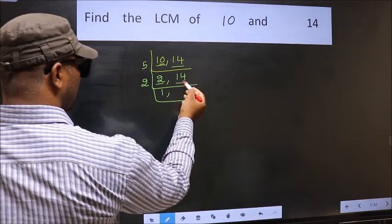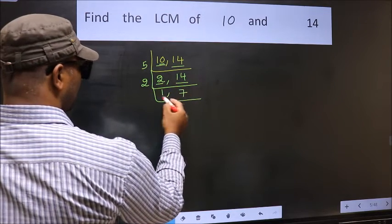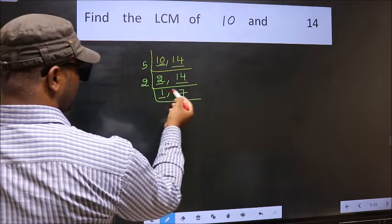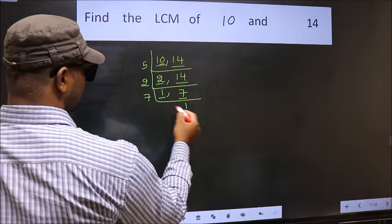The other number 14. When do we get 14 in the 2 table? 2 times 7 is 14. Now we got 1 here. So focus on the other number 7. 7 is a prime number, so 7 times 1 is 7.